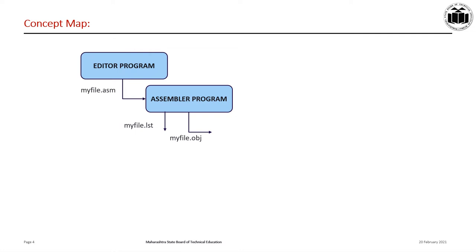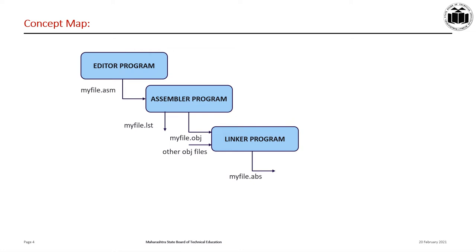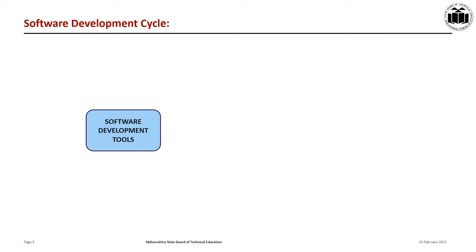The linker program takes one or more object files and produces an absolute object file with extension .abs. The .abs file is fed into an object-to-hex converter, which creates a file with extension .hex that is ready to run in ROM.